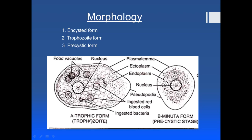The trophozoite form of any parasite is its feeding form, so you will see a lot of food vacuoles and ingested material in the trophozoite form — not only of Entamoeba histolytica but in any parasite. You will see the trophozoite form is its feeding form, and you can see the food vacuoles and the ingested RBCs.